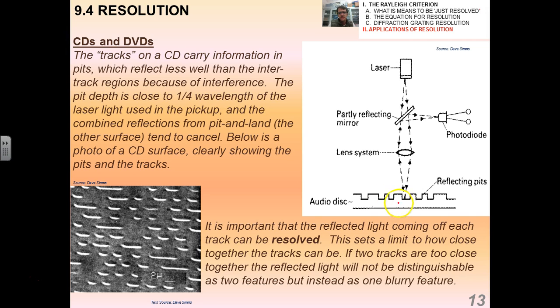And so what happens is you have a greater path length for the reflected light from the bottom of the pit than you do the land, and there's an interference pattern. But the point in the context of this lecture is that it's important that the reflected light coming off each track can be resolved. This is a limit to how close together the tracks can be. This is why Blu-ray discs are typically better than the conventional DVD, because Blu-ray disc uses a blue laser beam which has a higher frequency. So it kind of all comes together that way.